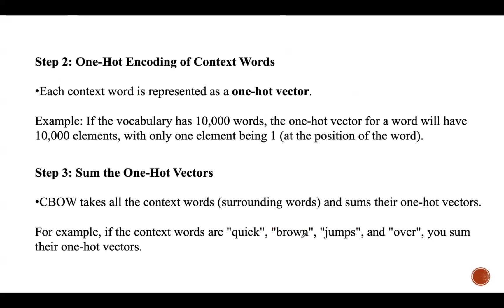Step two is one-hot encoding of the context words. Each context word is represented as a one-hot vector — a vector of zeros with a one at the position corresponding to the word's index in the vocabulary. For example, if the vocabulary has 10,000 words, the one-hot vector for a word will have 10,000 elements with only one element being 1 at the position of that word and 0 everywhere else.